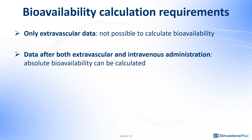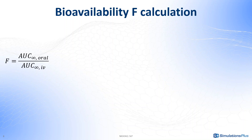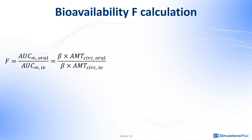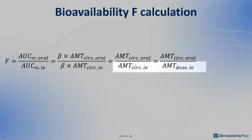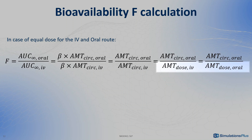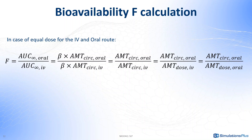In the following example, I will use an oral dose, but the same idea applies for other extravascular routes. The typical formula to calculate the bioavailability is F equals AUC to infinity for the oral dose divided by AUC to infinity for the intravenous dose, where AUC to infinity represents the total exposure. The AUC to infinity is proportional to the amount of drug that reaches the systemic circulation up to a constant beta we don't know. By using the ratio, the unknown constant cancels out. For the IV, the amount that reaches the circulation is equal to the amount of the administered dose. If the dose amount is the same for IV and oral, I get the fraction of the dose amount that reaches the circulation compared to the amount administered.